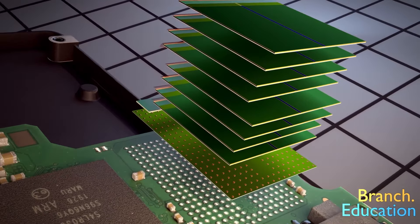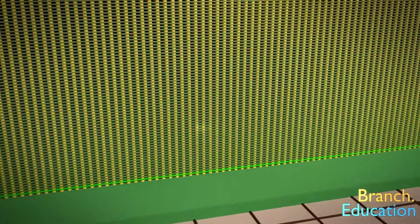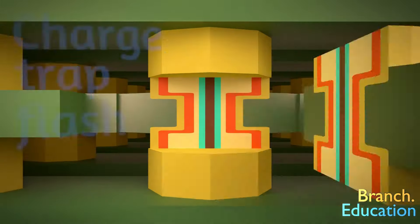To understand that, we've got to zoom in to a nanoscopic view of the insides. In here, we can see an individual memory cell called charge trap flash.